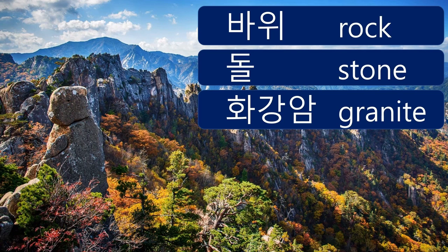Granite is the most widely distributed rock in Korea. It's a rock in which magma slowly hardens deep underground. It's stronger than marble, so it's hard to handle.